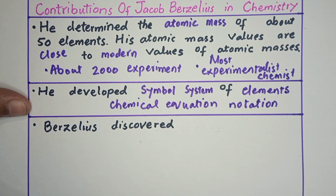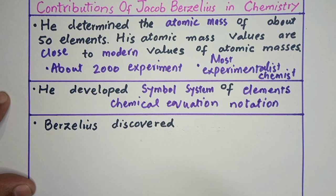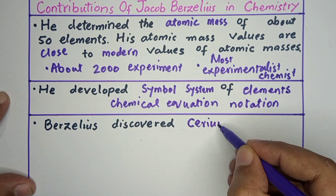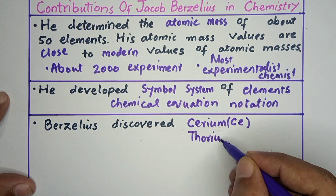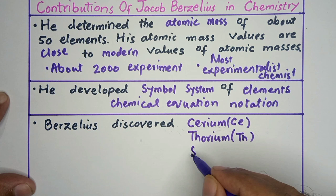Jacob Berzelius was an outstanding scientist. He discovered several elements, including Cerium, Thorium, and Selenium.